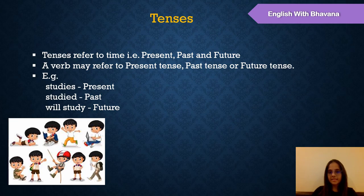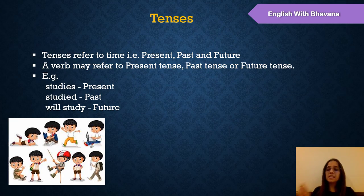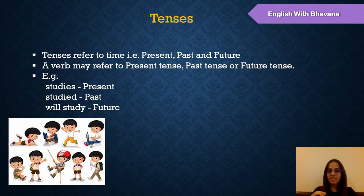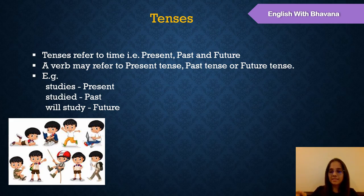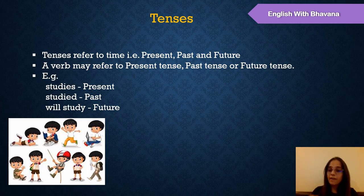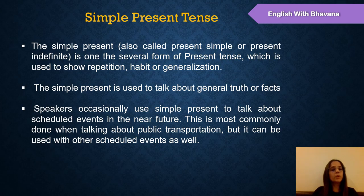A verb may refer to present tense, past tense, or future tense. For example, the verb 'studies' — the 'es' ending tells us it's present tense. 'Studied' — the 'ed' ending means it is past tense. 'Will study' — 'will' is there, so it is future tense. We will study in detail today about the simple forms of tenses.